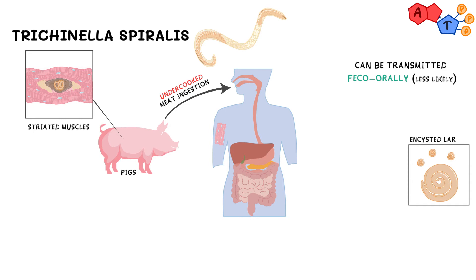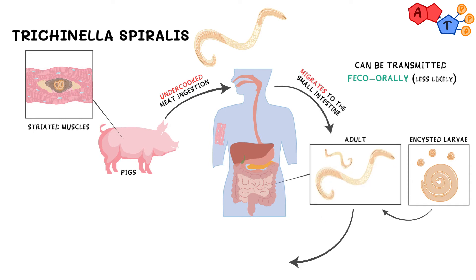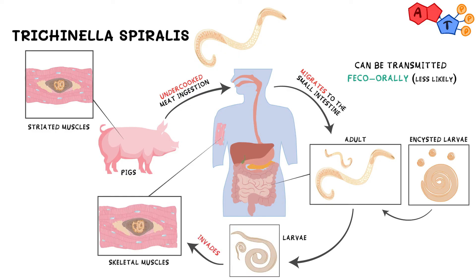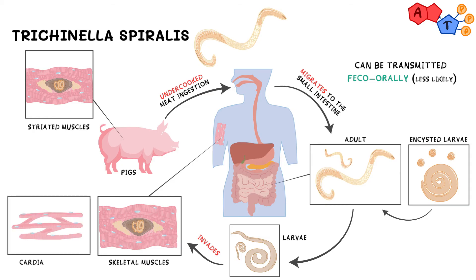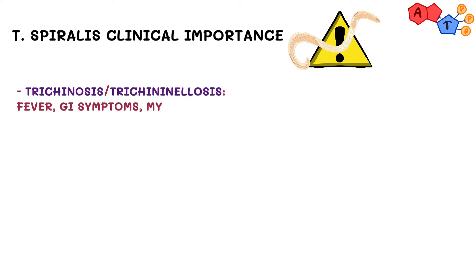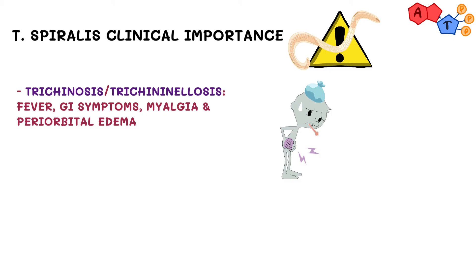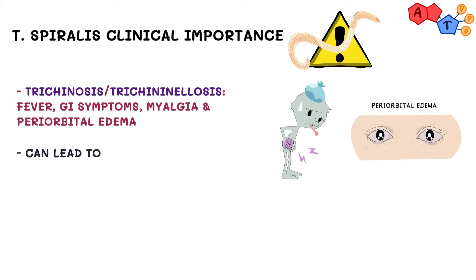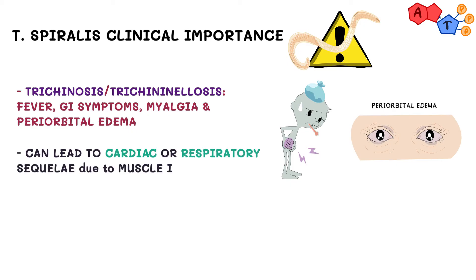After the encysted larvae is ingested, it will go to the small intestine where it will mature. Then adult forms will produce new larvae which will start the journey to invade striated muscles — mainly skeletal but can also target cardiac muscles. Trichinella spiralis can cause trichinosis or trichinellosis, which is characterized by fever, GI symptoms, in addition to myalgia and periorbital edema. Some patients might end up with cardiac or respiratory complications due to muscle involvement, and that can be fatal.